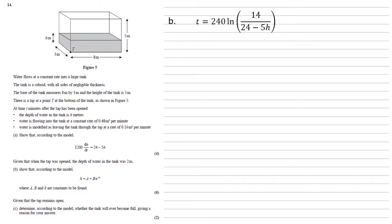As we want to get that h out by itself, we're now going to bring the 240 over to the left. So we have t over 240 is equal to ln 14 over 24 minus 5h. I've done that because now we can take e of both sides. So we get e to the power of t over 240. And on the right-hand side, the e and the ln would cancel out to just leave the 14 over 24 minus 5h.